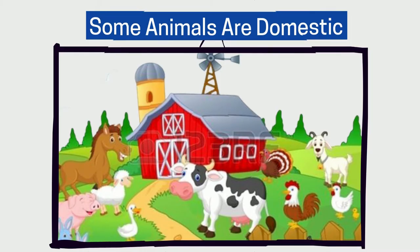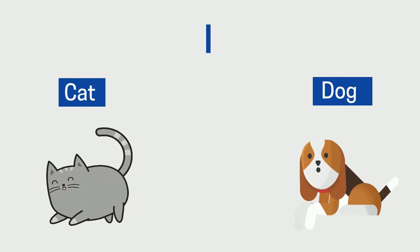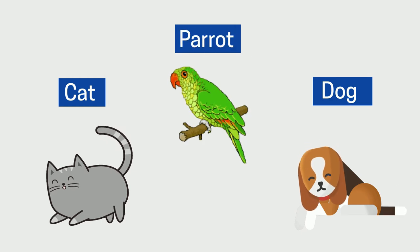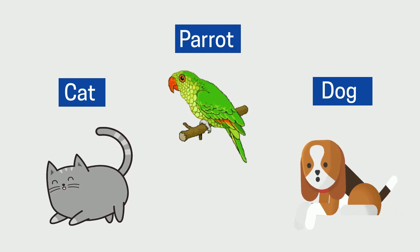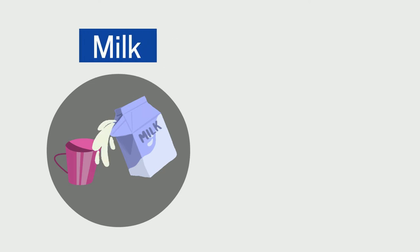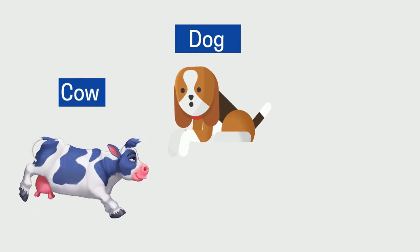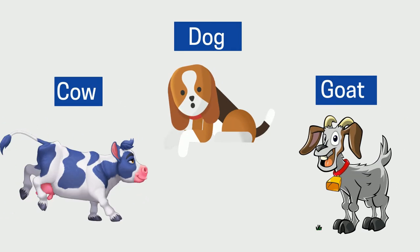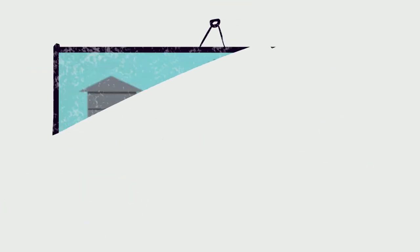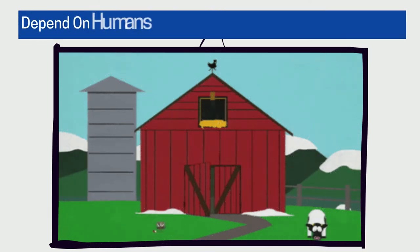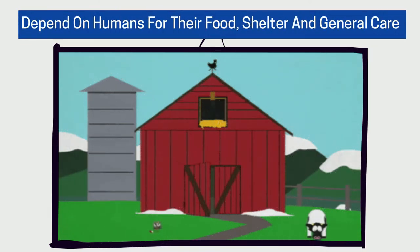Some animals are domestic — they are kept in the house or on farms by humans for companionship as pets, like cats, dogs, and parrots, or for getting some kind of benefit from them, like guarding or giving milk and meat, such as dogs, cows, and goats.